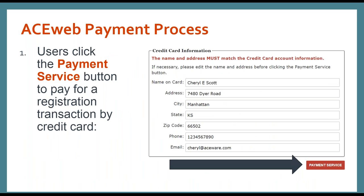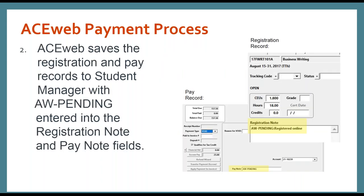Let's jump right in — the ACEweb payment process. When a student is on your ACEweb site, they've got all their courses in their cart, and they are ready to pay, they click that Payment Service button. It may be labeled differently on your template, but basically on the enrollment cart, when they click that button to go to the Payment Service, right at that time ACEweb is going to create a registration record and attach a payment record to it with AWPending entered into the registration note and the Paynote fields.